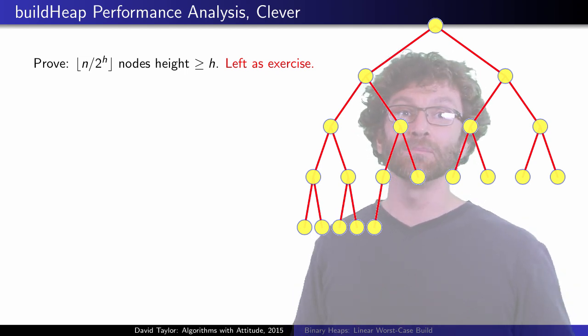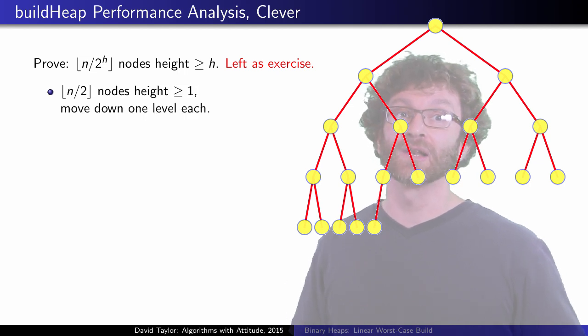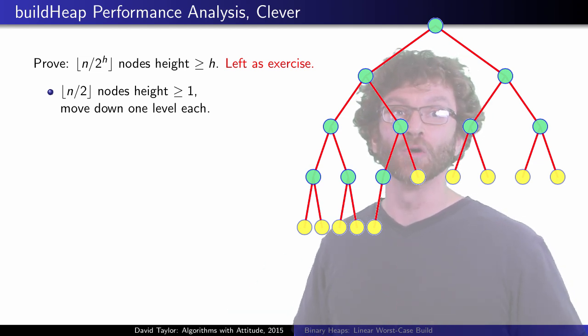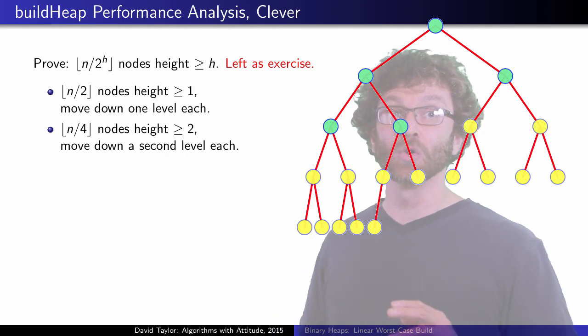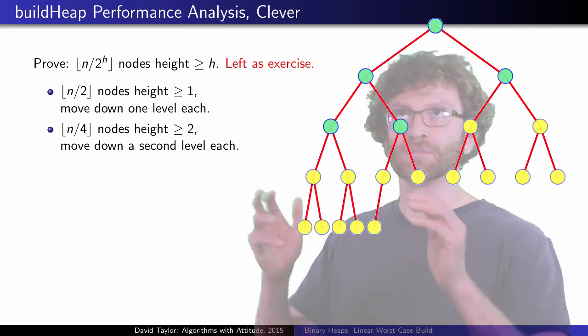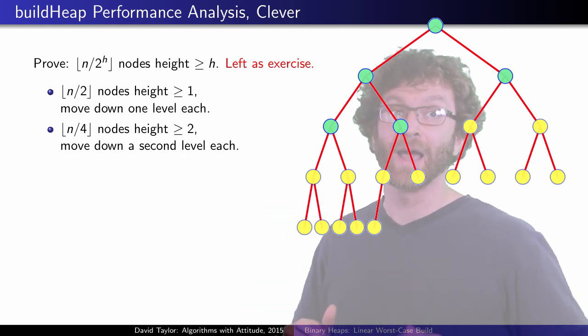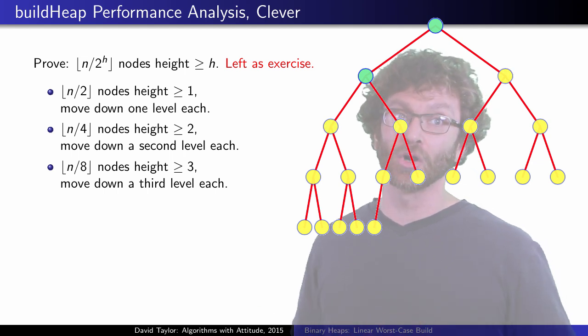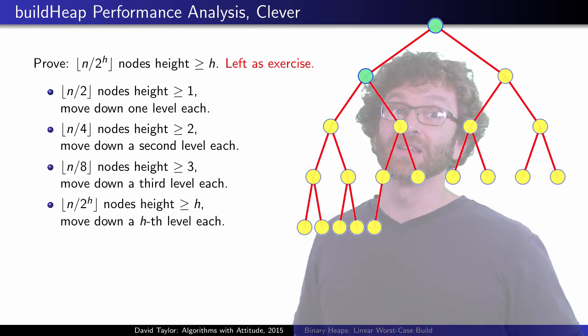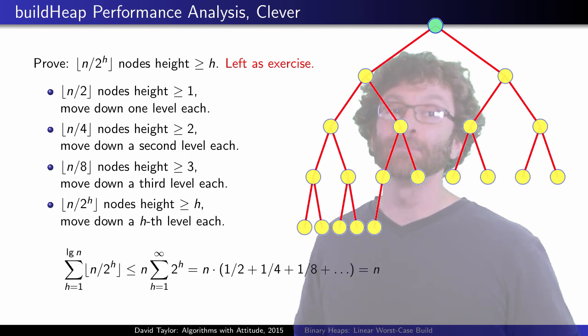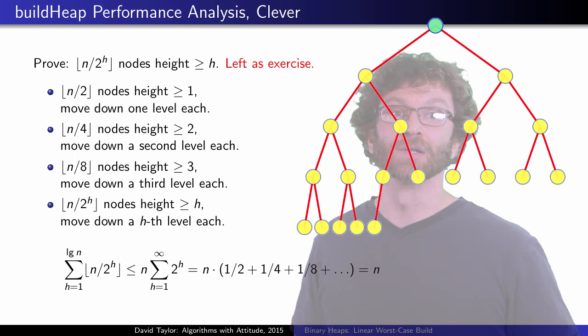Now, when being heapified, only the values that start at height at least 1 can be moved down even one level. In the worst case, all of those nodes do move down one level. Nodes starting at height 2 can each move down a second level. But we have already moved them down one level, so we only have to count one extra to move down that second level. Nodes starting at height 3 can move down a third level. This gives us a summation that is easier to bound than the original summation, and a simple proof of the linear run time for building a heap.